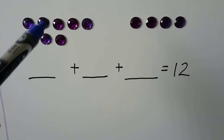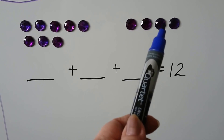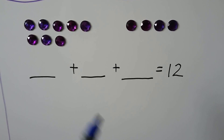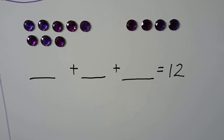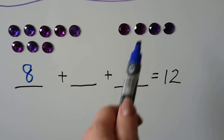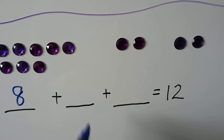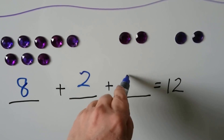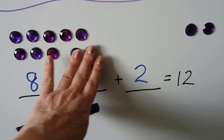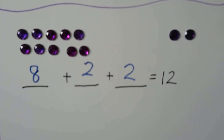Here we have 8 counters and 4 counters. We can split these up so we have 3 add-ins. We can put the 8 here and split the 4 into a 2 and a 2. 8 plus 2 will make a 10, then 11, 12. It equals 12.